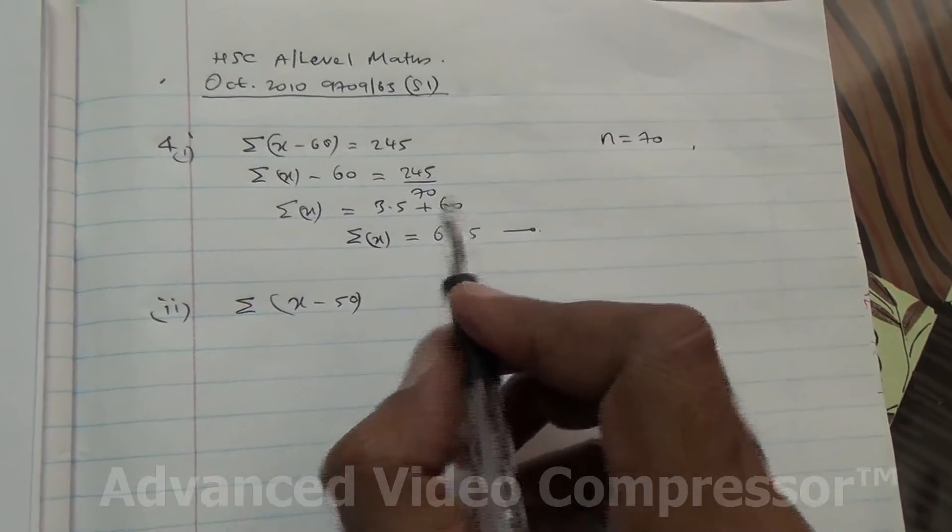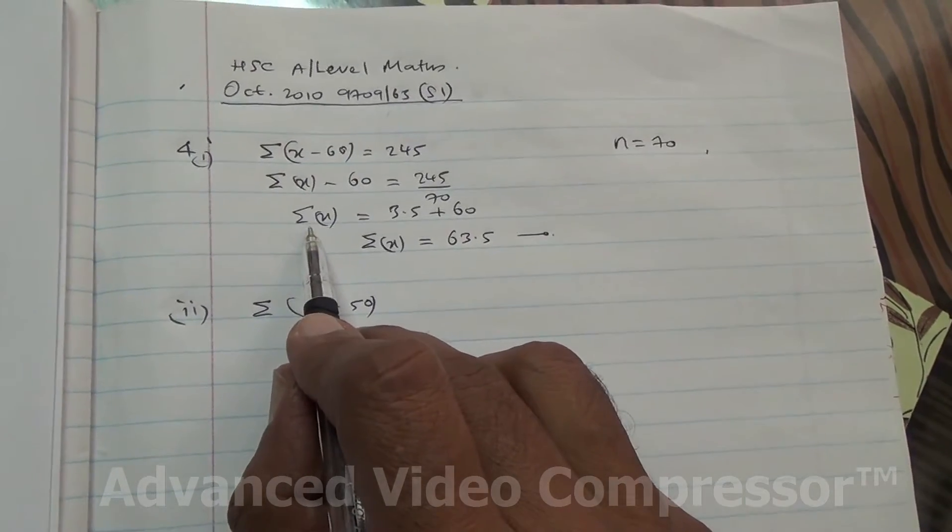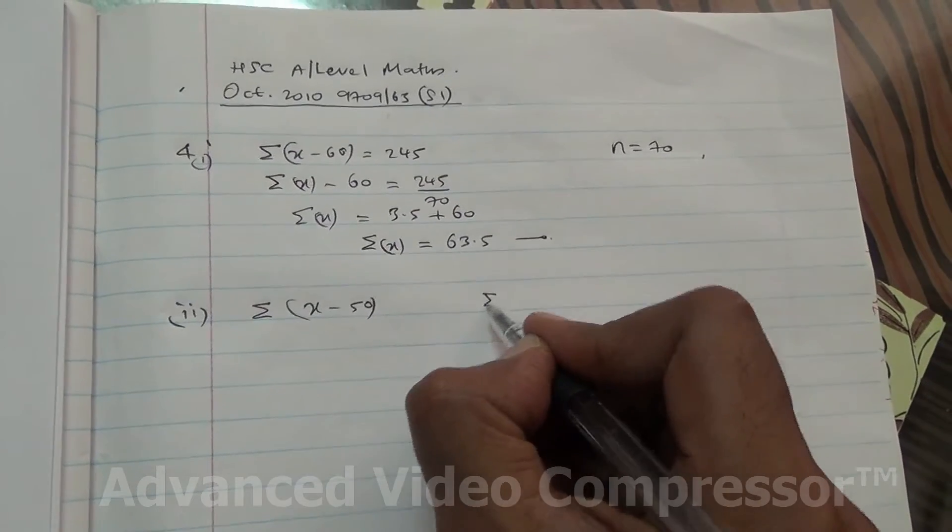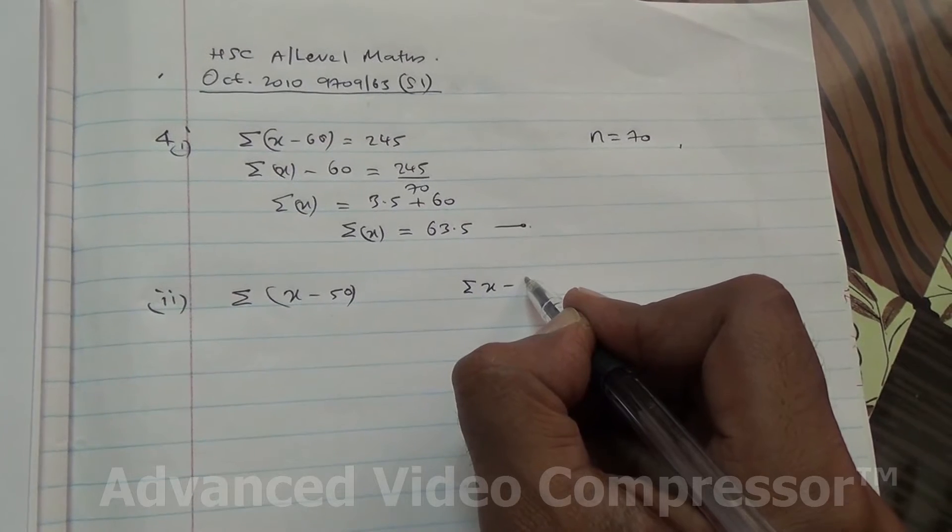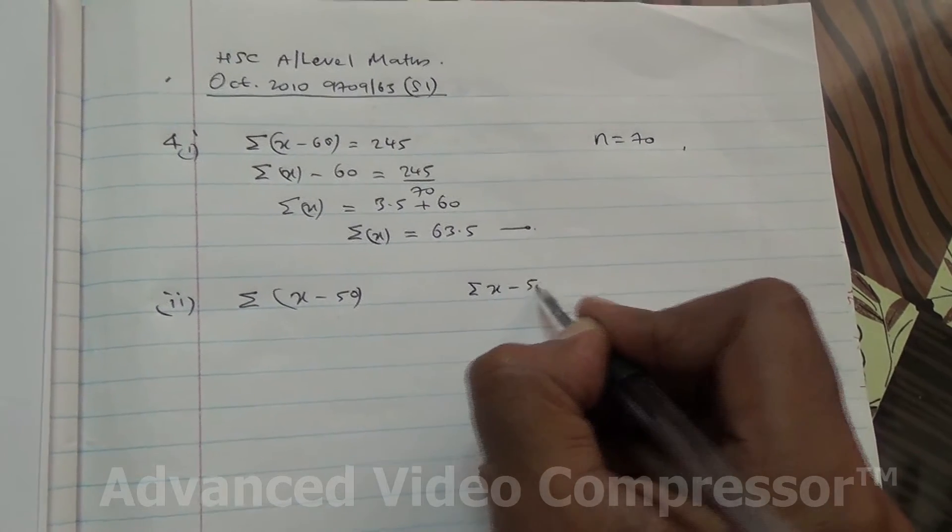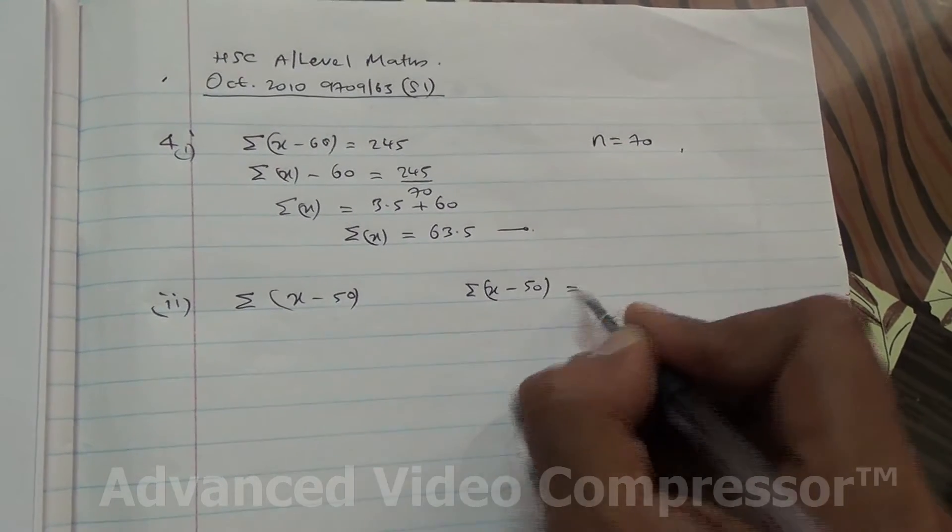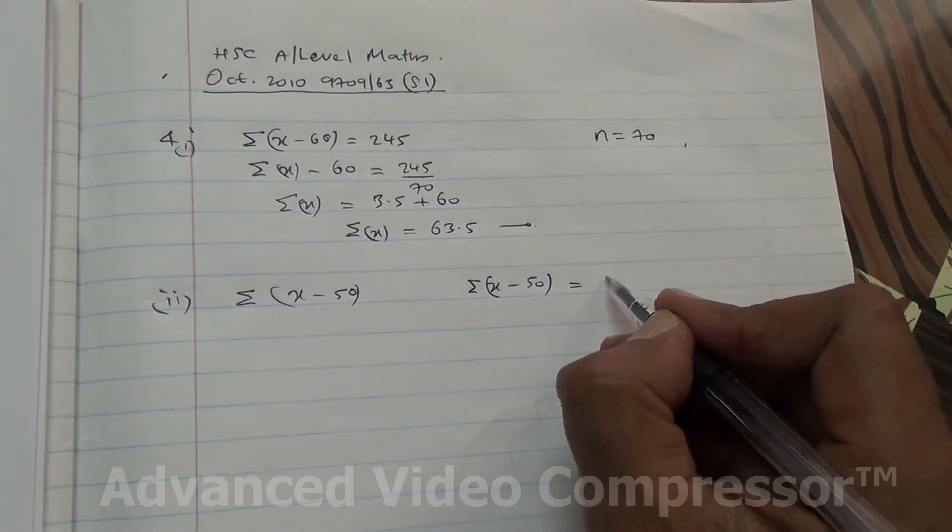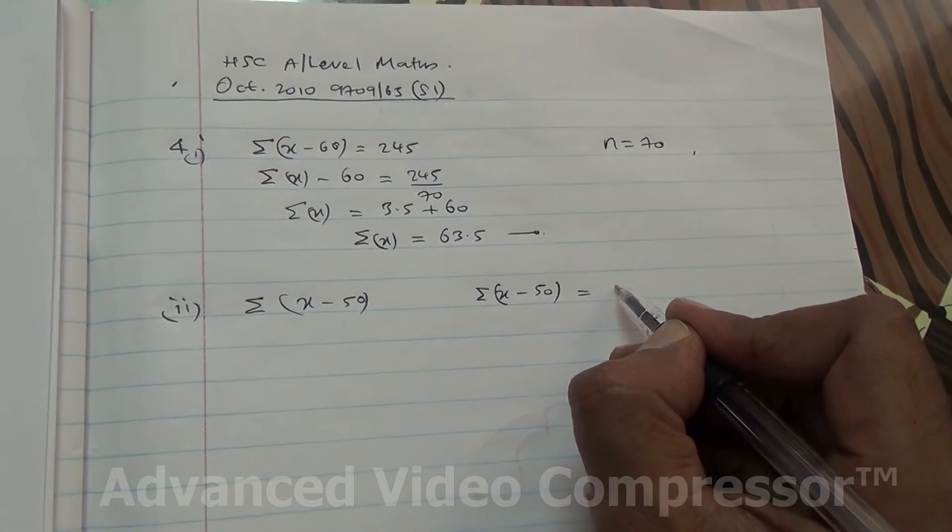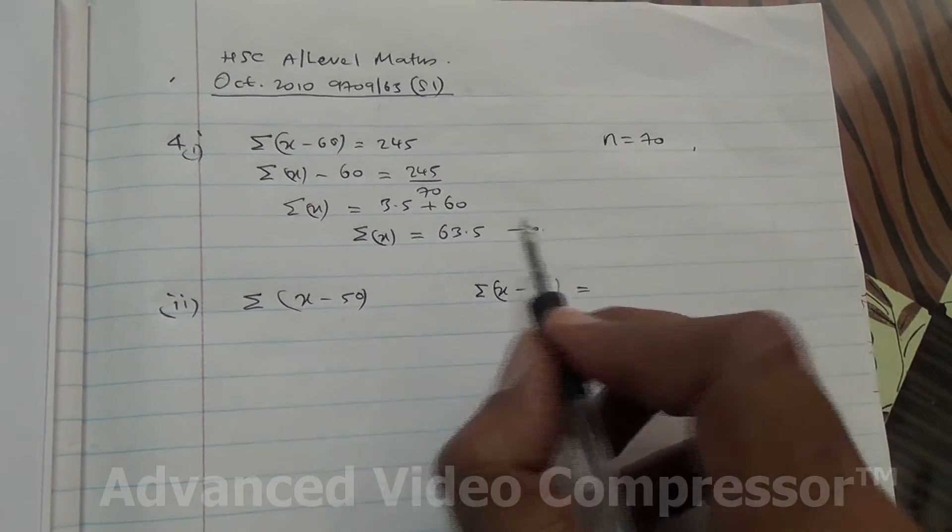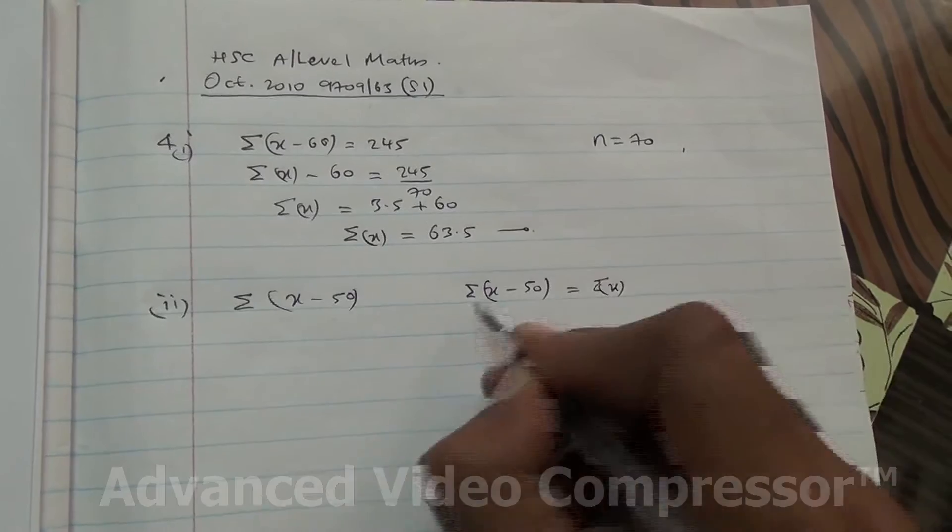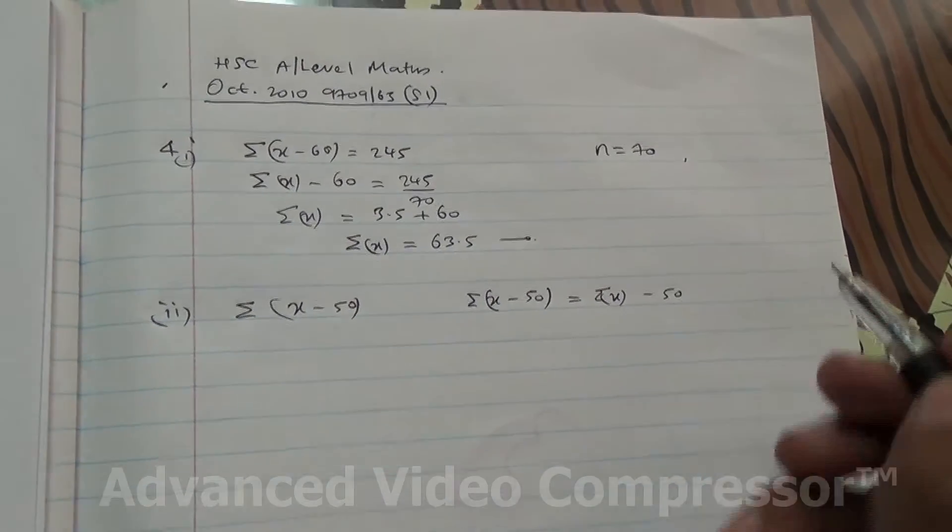So the summation of x minus 50 is going to be originally Σ(x minus 50). So this is basically summation of x, which is then minus 50. Right, but remember you've got to put the n here.